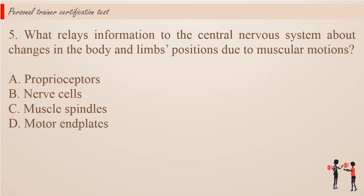Question 5. What relays information to the central nervous system about changes in the body and limbs positions due to muscular motions? a. Proprioceptors. b. Nerve cells. c. Muscle spindles. d. Motor end plates.